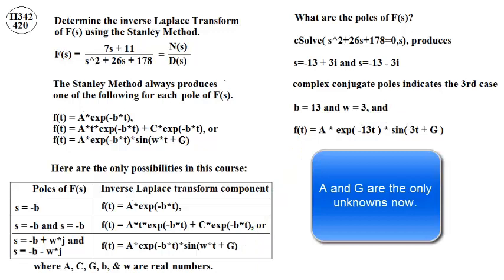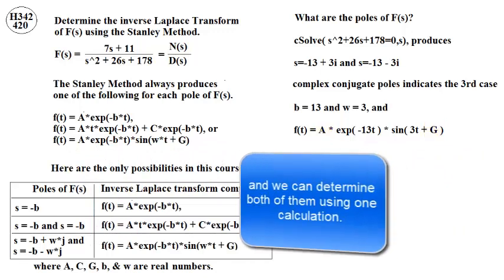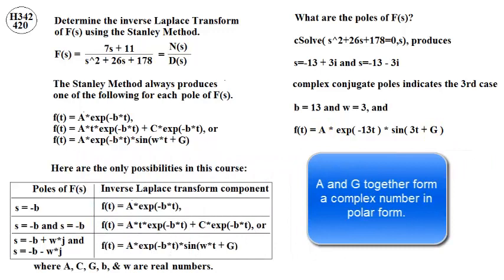A and G are the only unknowns now, and we can determine both of them using one calculation. A and G together form a complex number in polar form. A is the magnitude and G is the angle in radians.